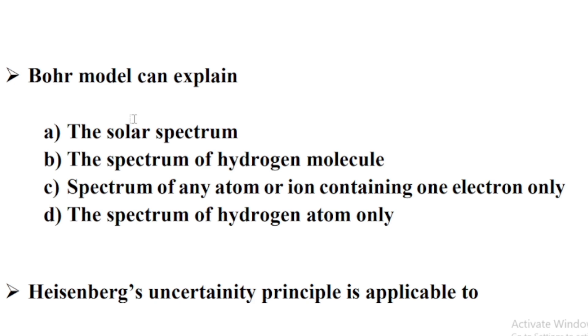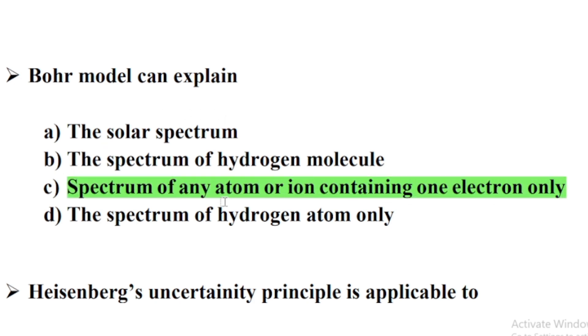Bohr model can explain — Option C: Spectrum of any atom or ion containing one electron only.